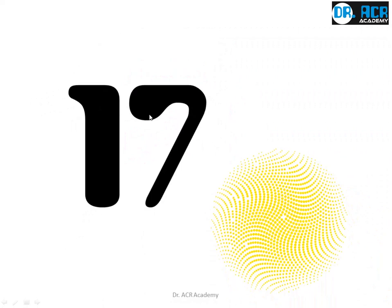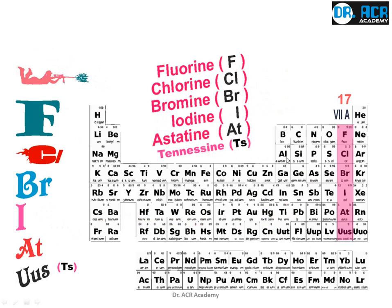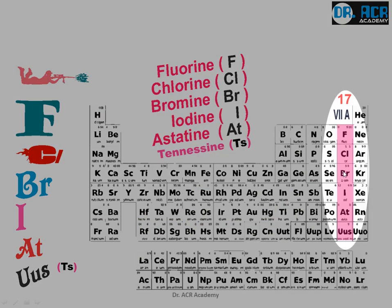Now we come to the seventeenth group. In the same forest, there lived a girl who worked for the army. Her name was Briat U.S. She was known for her fast clicking on the trigger, so everyone called her Fast Click Briat U.S. This is how it is related to the periodic table: Fast Click Briat U.S.